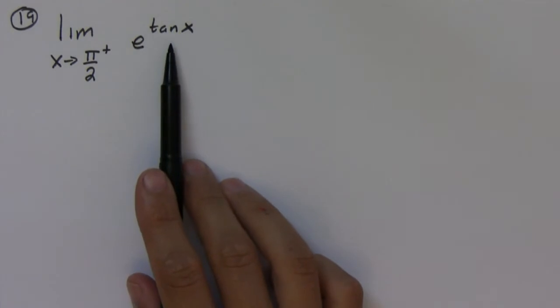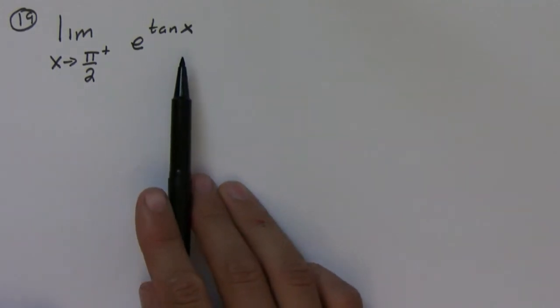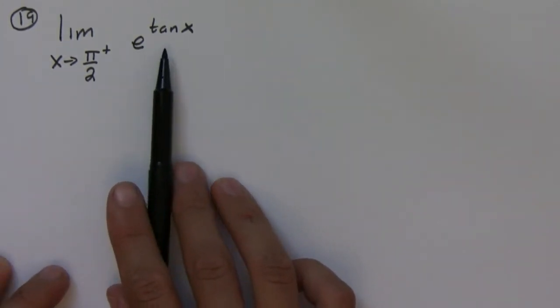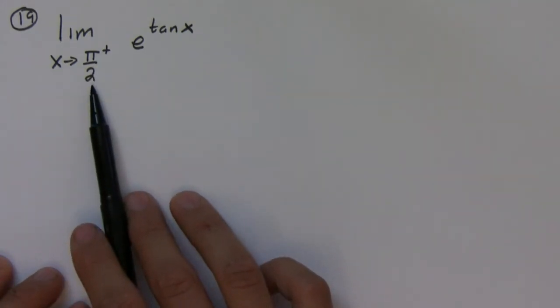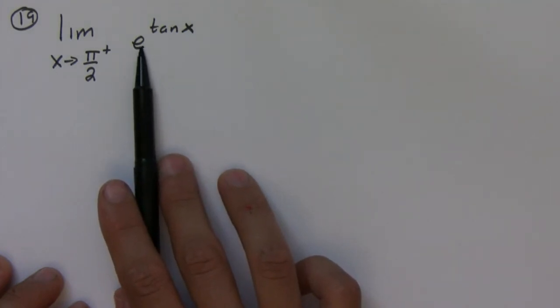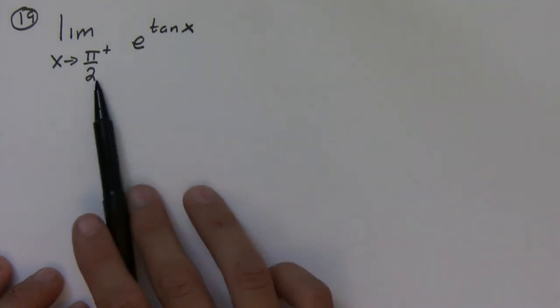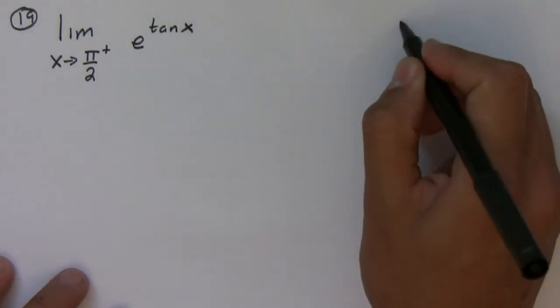Okay, so this involves a trig function, and limits involving trig functions generally are a little bit trickier because you have to know about the function itself. Here it says that x approaches π over two from the right side, and we have e being raised to the tangent. Now we know that tangent of π over two is undefined, but that's because there's a vertical asymptote at π over two.